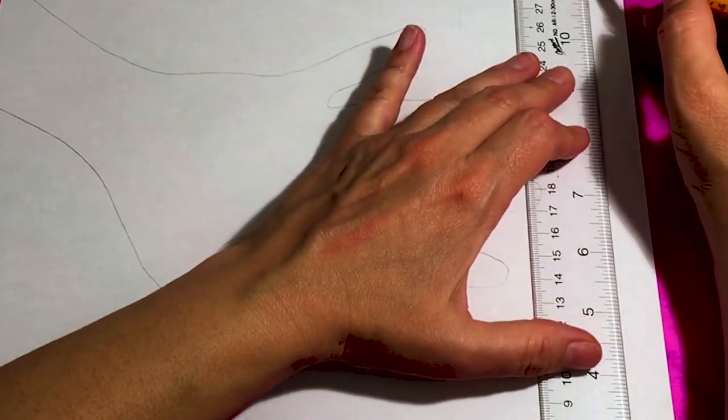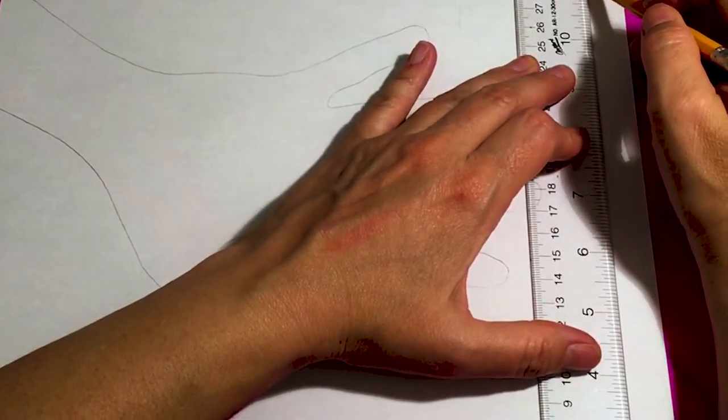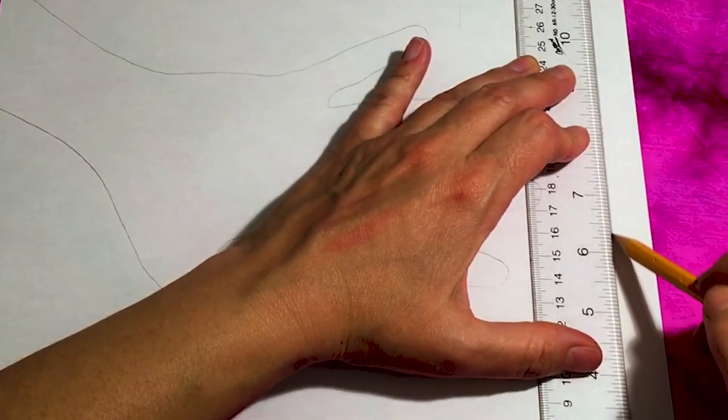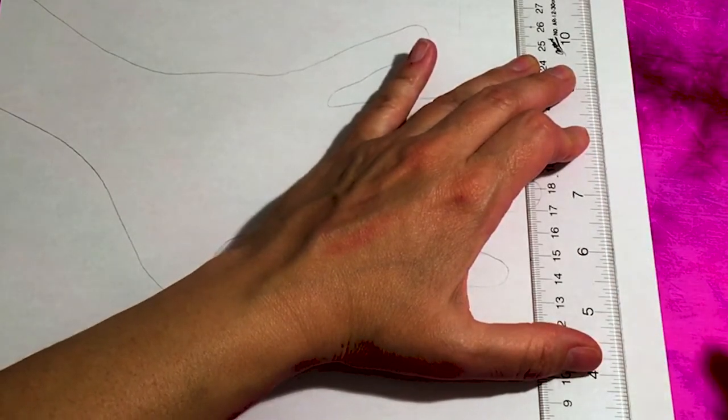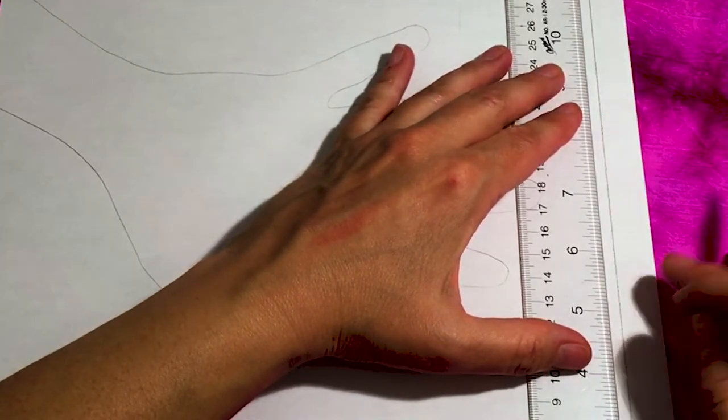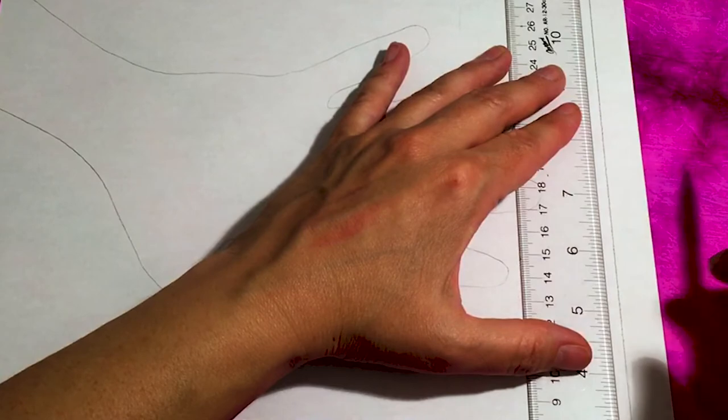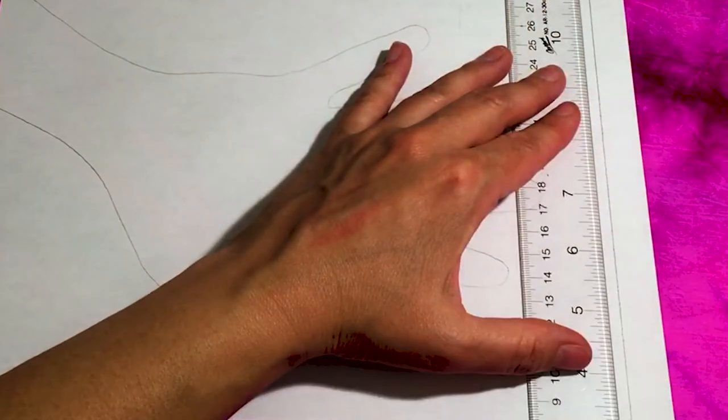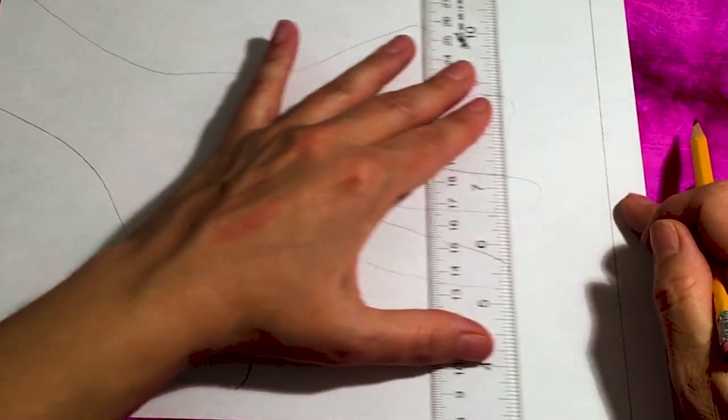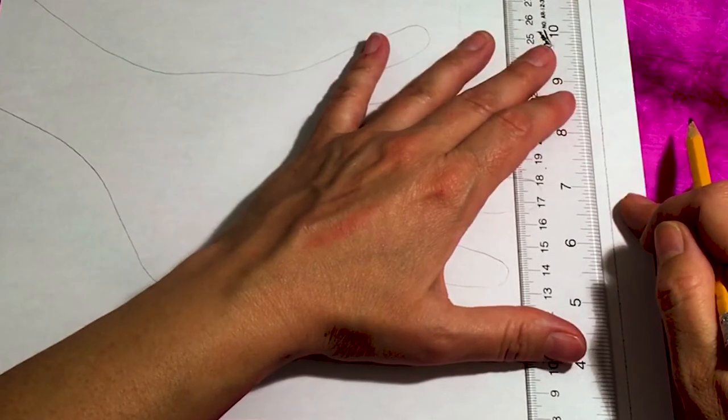You can space your lines out as you wish. So you can make them all the same width or you can make some thinner and some thicker. So I'm going to do one wide one and then followed by three thin ones and then I'm going to repeat my pattern like that. But you can make your lines the width that you want.